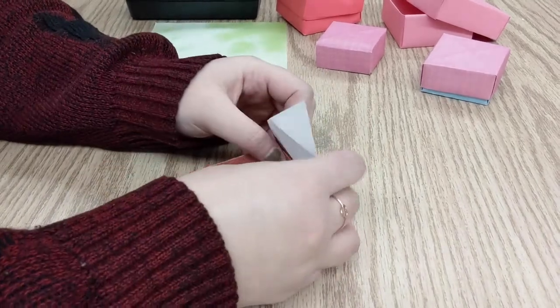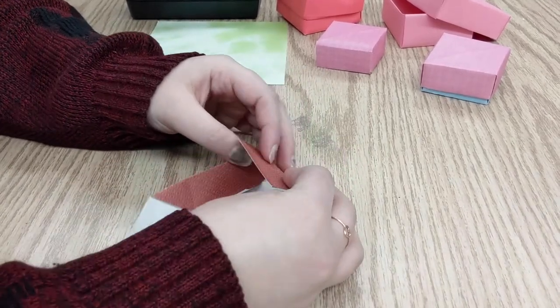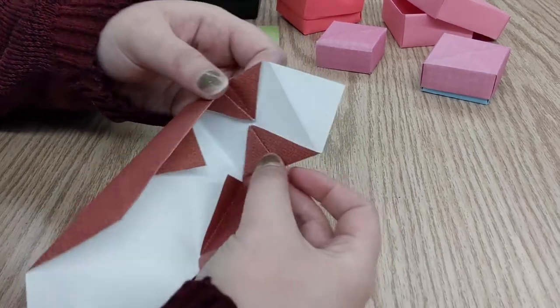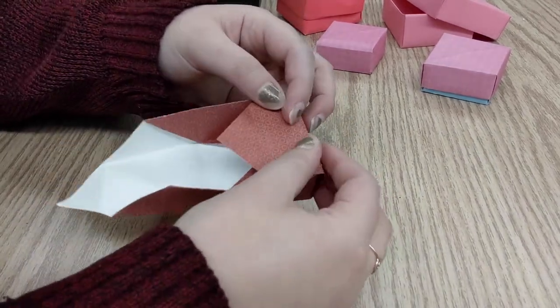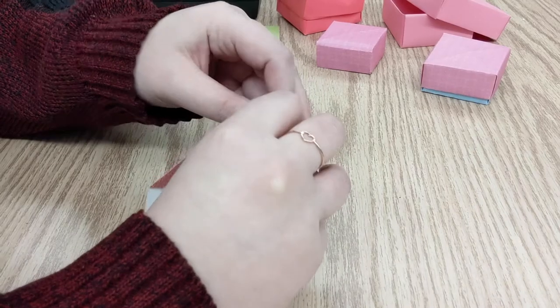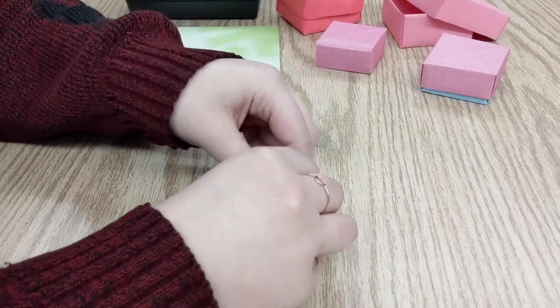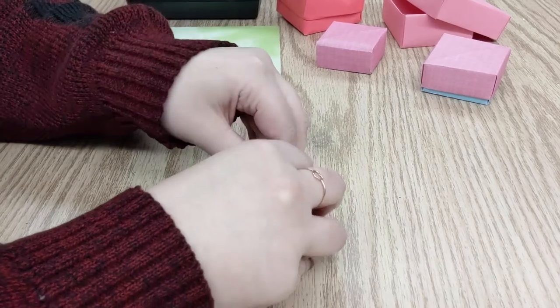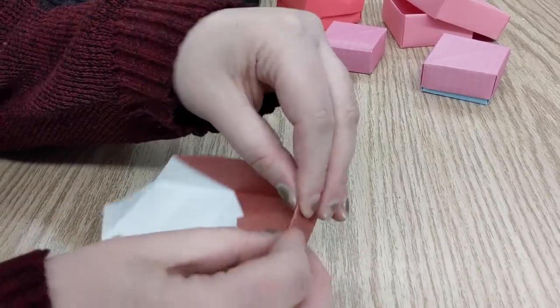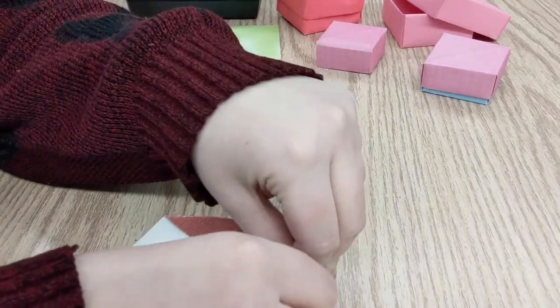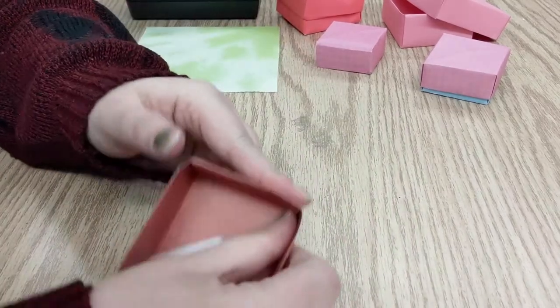All right, so your next step is gonna be finishing the wall of your box, which means over this side, you're gonna fold down. Now you might want to adjust a little bit before you do your final fold to make sure that it's gonna be sturdy, and then crease it on the end. All right, and now you have sides of a box.